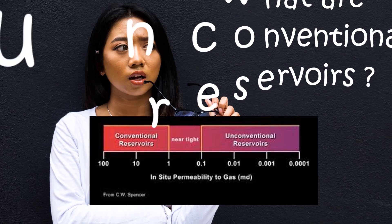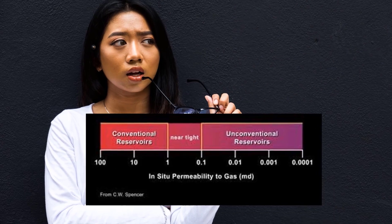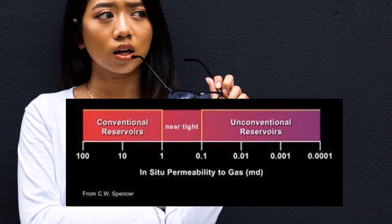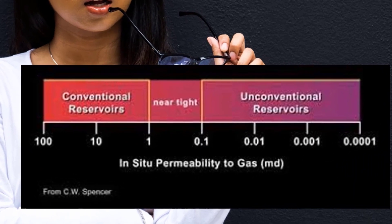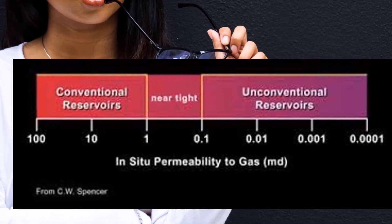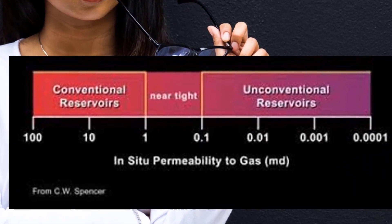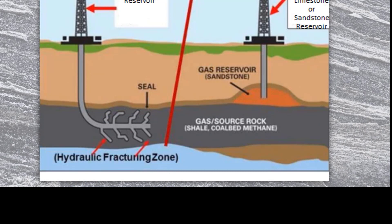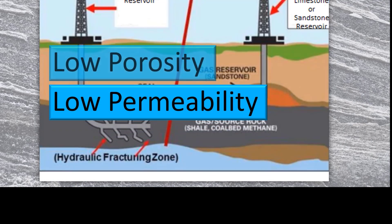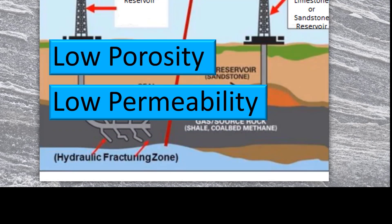Unconventional reservoirs are typically ultra-tight source rock, trap, and seal-containing organic rich matter that has reached thermal maturity without migration. Unconventional reservoirs have low permeability and porosity, and are therefore difficult to produce.